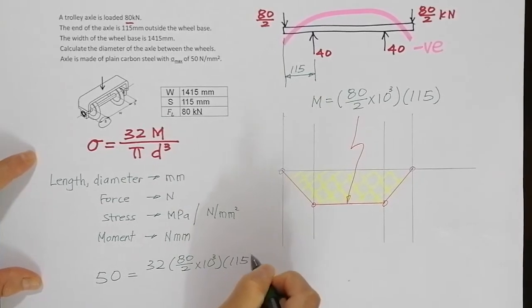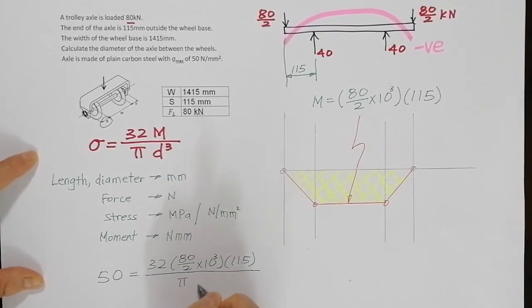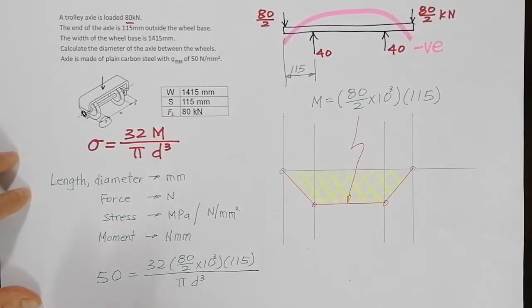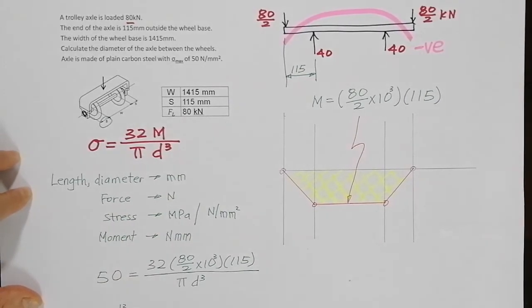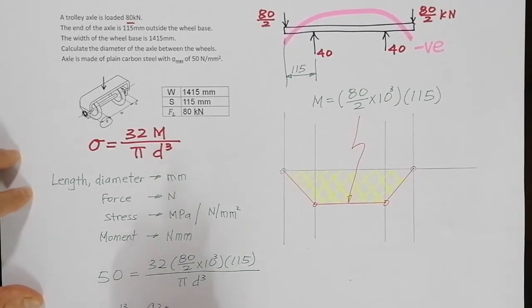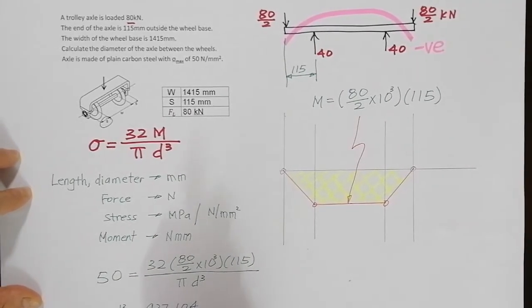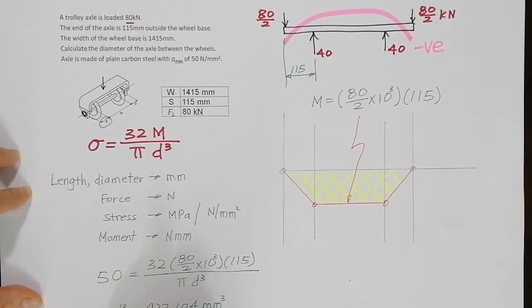80 over 2 times 10 to the power 3 times 115 was the moment arm, divided by pi d cubed. So from here I get d cubed. You trust my value here: 937,104 millimeter cubed, and diameter will be 97.8 millimeters.